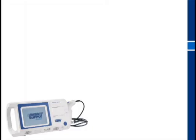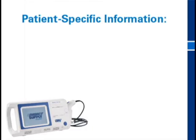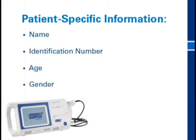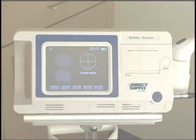The Attendant Bladder Scanner can store records of previous scans completed on a specific patient. You can save a patient's name, identification number, age, and gender. Up to 100 patient records can be saved.